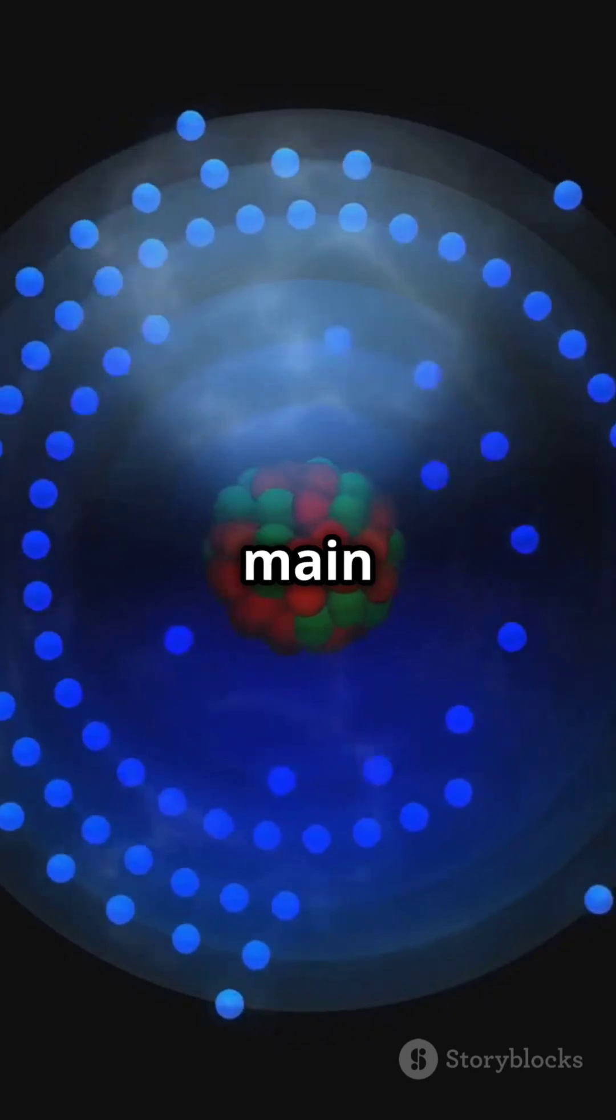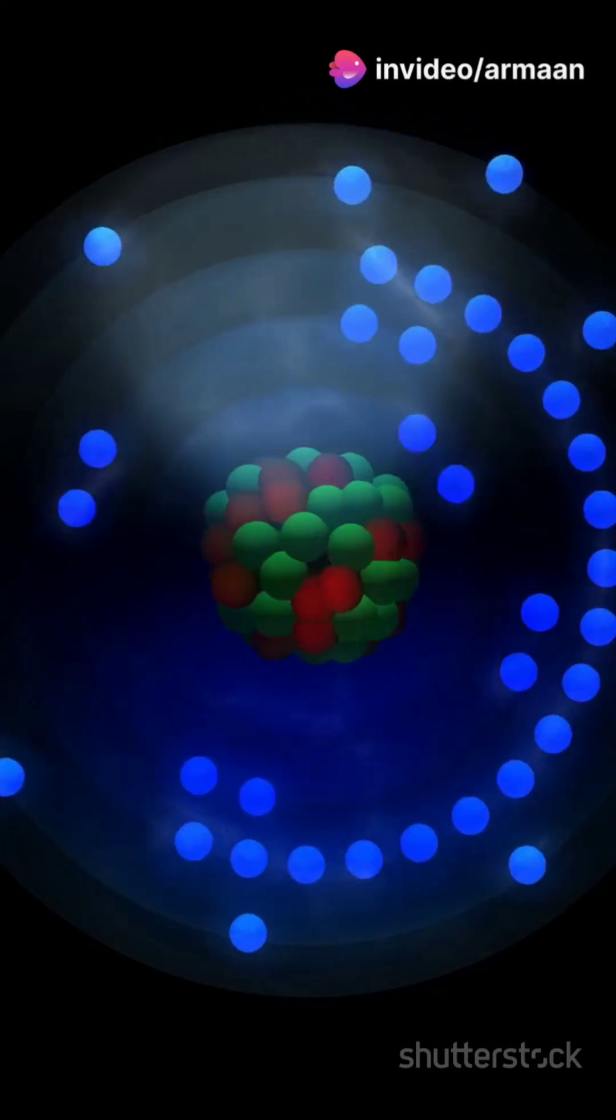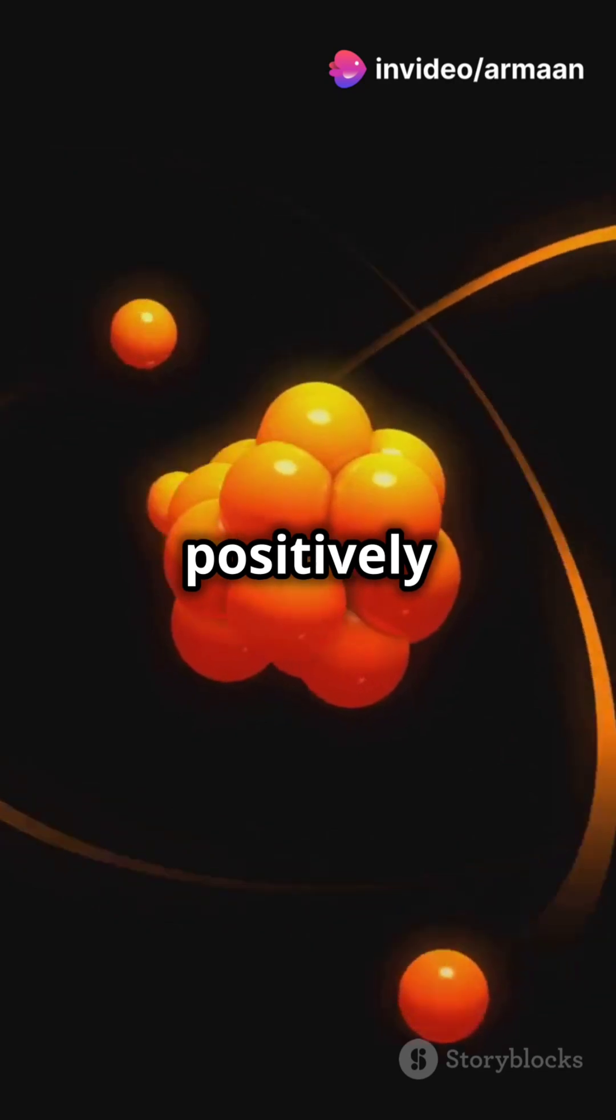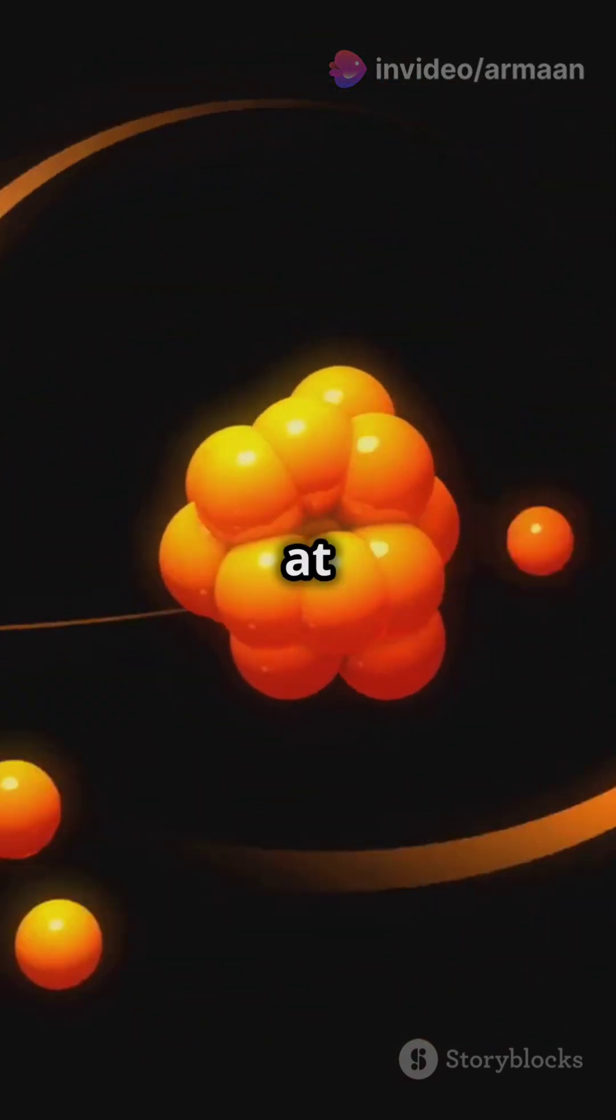Inside an atom, we have three main particles: protons, electrons, and neutrons. While protons are positively charged and electrons are negatively charged, neutrons have no charge at all.